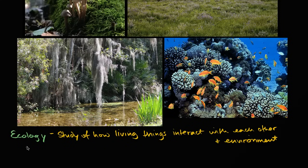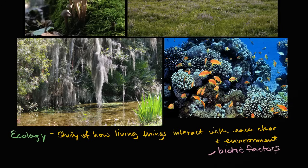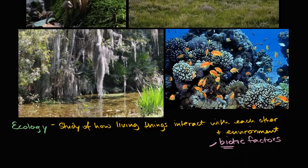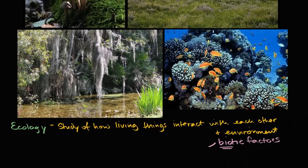We're now going to start looking at ecology, which is the study of how living things interact with each other and their environment. How is life interacting with living things? That's the technical term often given as biotic factors — you have the word 'bio' in there, signaling life — or non-living things, called abiotic factors. 'A' is the prefix for 'not,' so abiotic means not living.